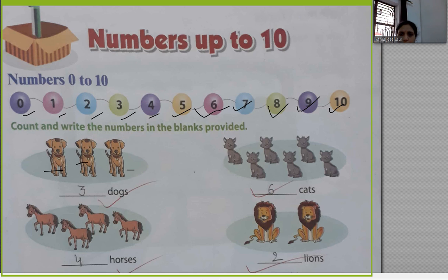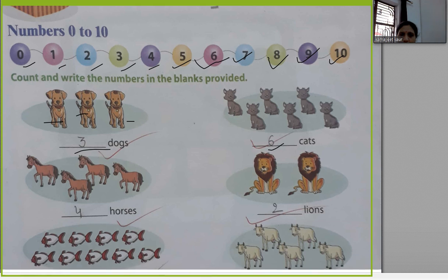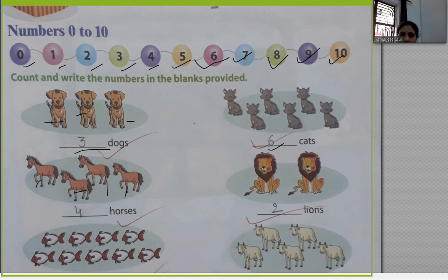Students, there was a technical problem. How many dogs are there? There are three dogs. How many cats are there? There are three cats. How many horses are there? Let's count: one, two, three, four — there are four horses.